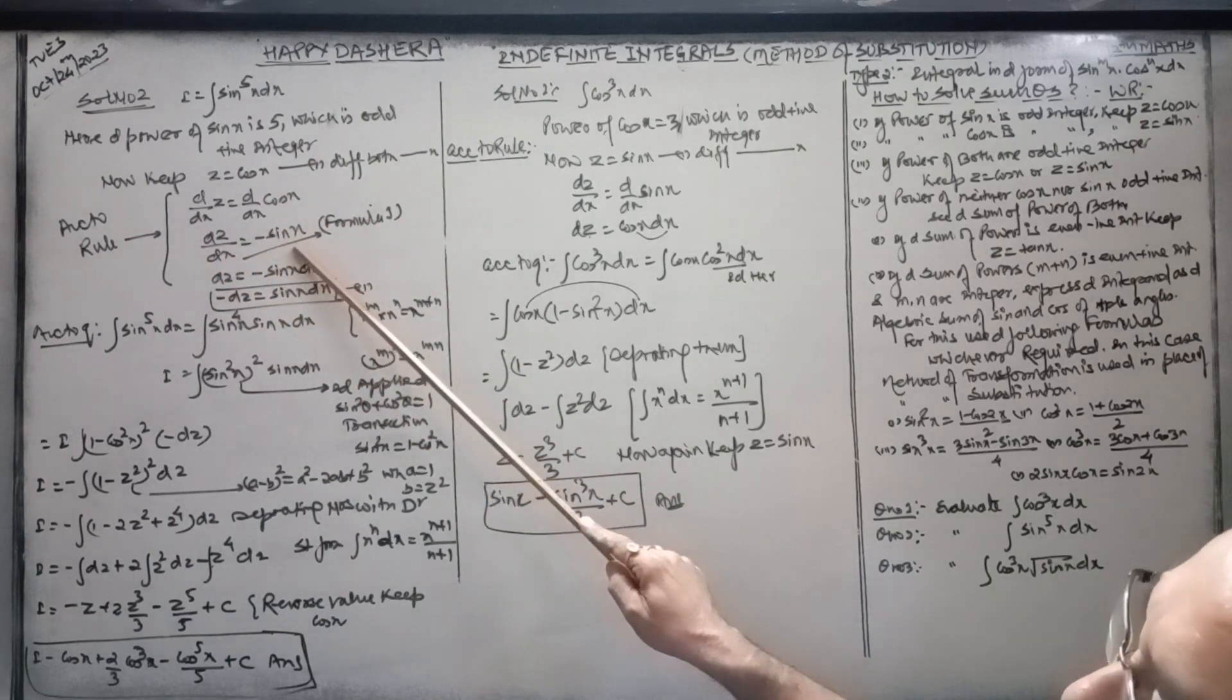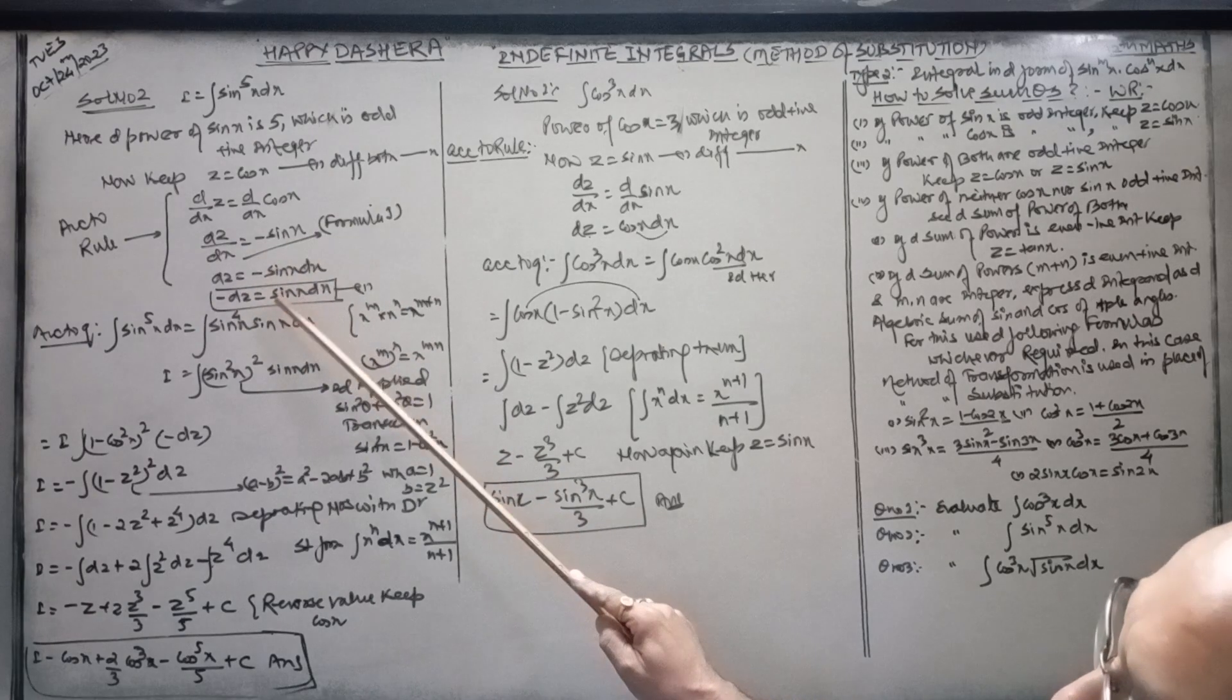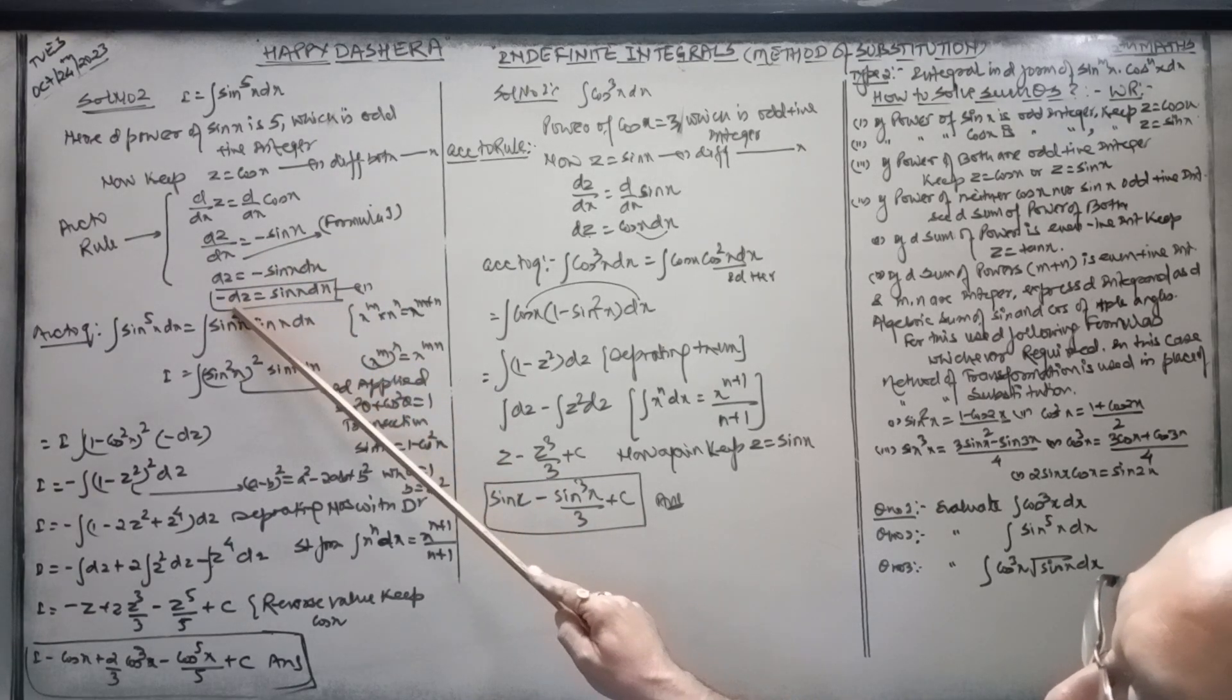So dz/dx is equal to minus sin x. Now, the value of sin x dx is minus dz.